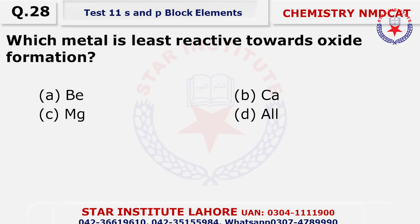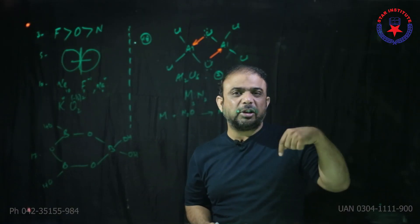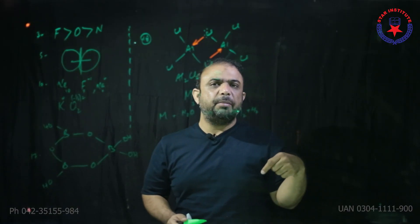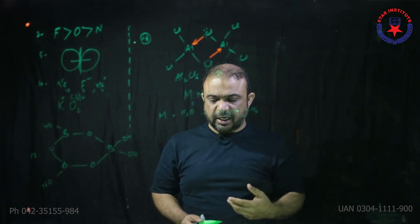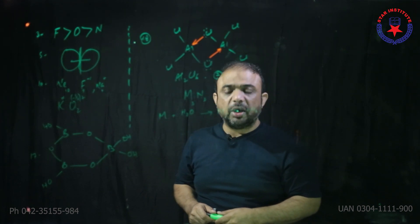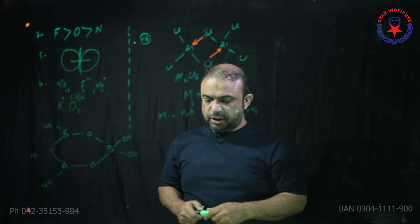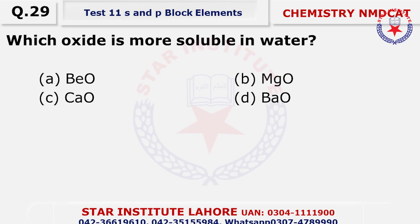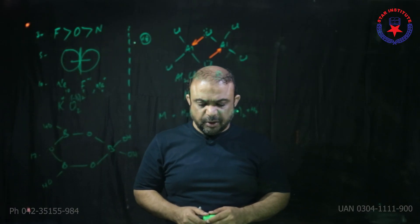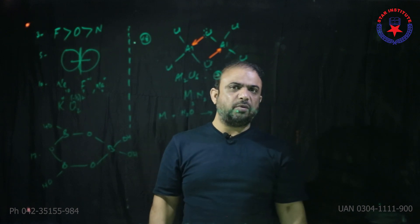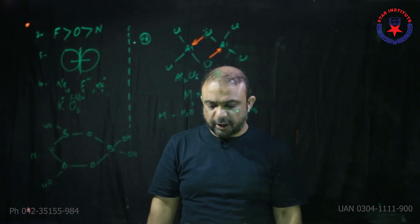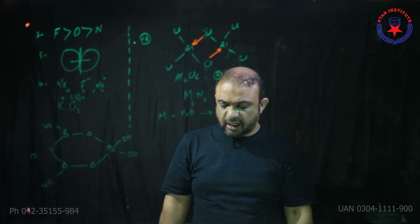Question number 28: Which metal is least reactive towards oxide formation? Top to bottom reactivity decreases and electropositivity decreases, so the topmost element — beryllium — is the least reactive. Choice A. Question number 29: Which oxide is more soluble in water? Top to bottom, solubility of oxide and hydroxide both increase, so the choice is D — barium oxide.